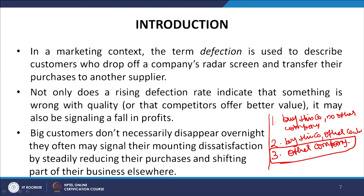A rising defection rate indicates something is wrong with quality or that competitors offer better value, and it may also signal a fall in profits. Big customers do not necessarily disappear overnight — they often signal mounting dissatisfaction by steadily reducing their purchases and shifting part of their business elsewhere. It is important for companies to understand whether a big customer is buying everything from them or from competitors also.